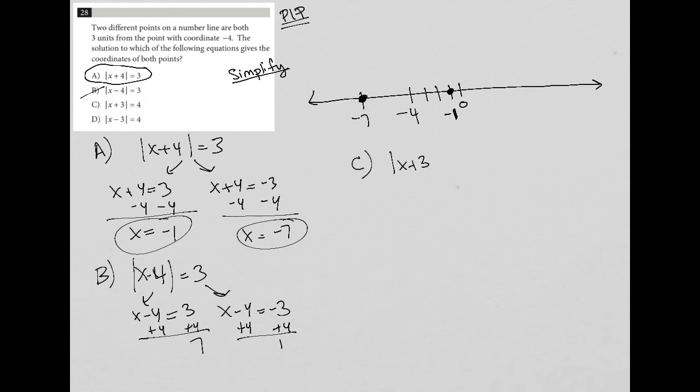C absolute value of X plus three equals four. Whenever you solve the absolute value equation, you rewrite the equation twice without an absolute value symbol. The first time it looks just like the original question. And the second equation, you just switch the sign of the answer. So in this case, I get positive one and negative seven. So that's why those are out.